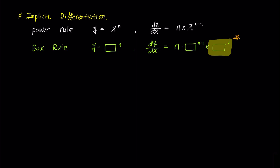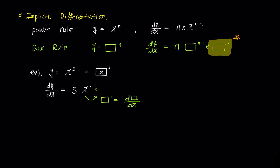Box prime is so important that I will put an asterisk above it. Remember that no matter what equation you differentiate, don't forget to multiply by box prime at the end. Now look at the first example to see why we need to use box prime. The first example is y equals x to the power of 3, and we need to find dy over dx. X is in the box. Using the box rule, we put 3 in front and multiply by x squared. Then we multiply by box prime. Since we are differentiating with respect to x, box prime becomes dx over dx, which simplifies to 1. Therefore, the answer is 3x squared.